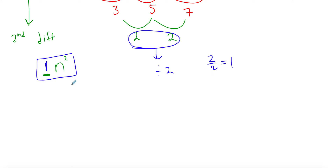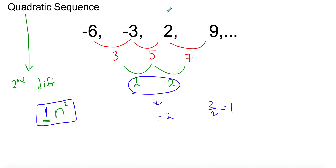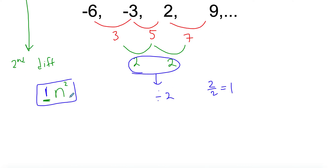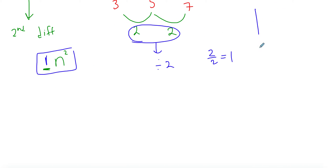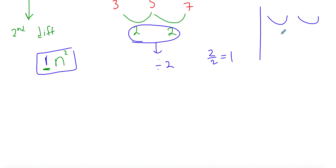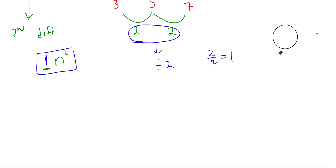So this is the beginning of my nth term — I need a formula for this quadratic sequence, and it starts with n squared. For example, if the second difference were 12, you'd divide 12 by 2 to get 6, and write 6n squared. So just take whatever second difference you have and divide it by 2. In our case we get 1, so we write n squared.